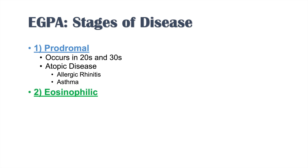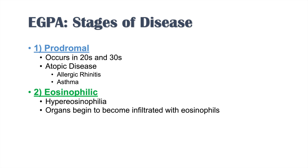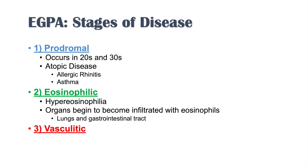The next stage is the eosinophilic stage. As its name implies, we see hyper-eosinophilia and an increased eosinophil count. Organs begin to become affected as high amounts of eosinophils infiltrate them, leading to granulomatous inflammation. Most commonly, the lungs and gastrointestinal tract are infiltrated, along with the skin and other organ systems. The third stage is the vasculitic stage, occurring in the 30s to 40s — a bit later than the eosinophilic stage.